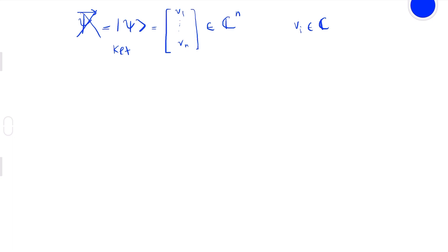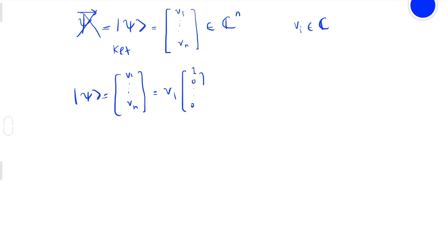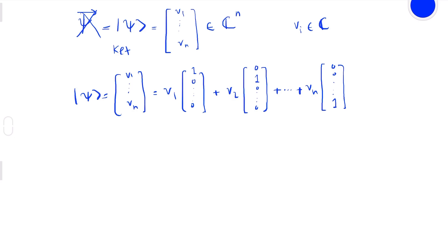I can represent every vector (v1, ..., vn) as a linear combination: v1 times (1,0,...,0) plus v2 times (0,1,...,0) plus ... plus vn times (0,...,0,1). And we know that every real number is also a complex number, so these vectors belong to C^n.